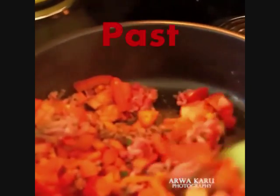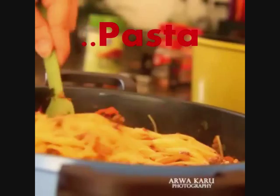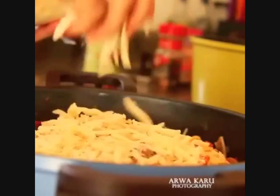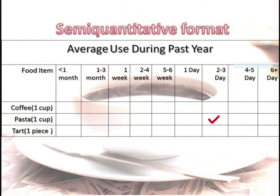Another example: if you eat pasta every two to three days in a year and you were given the semi-quantitative format, in this form they will determine the portion size. They will ask you how many times did you eat one cup of pasta in a year.